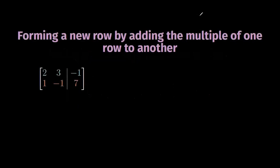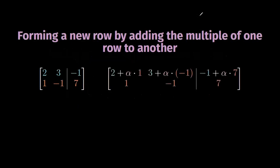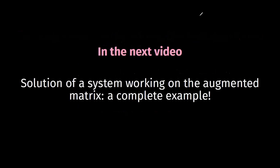The third operation is the most complicated. We replace one row with the sum of itself plus a multiple of another row. For example, we replace the first row with the first row plus α times the second row. This gives entries 2 + α·1, then 3 + α·(−1), and on the right side of the vertical line, −1 + α·7. In summary: row 1 ← row 1 + α·row 2. We will study the augmented matrix with 4 rows and 5 columns from earlier in the next video.